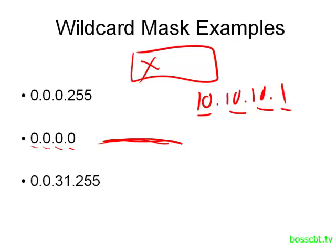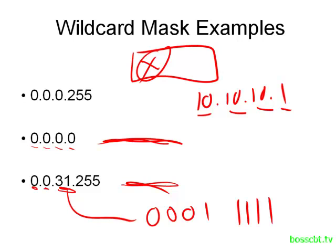Let's take a look at another example — this one is a bit more complicated. Whatever IP address we have configured in the access list, we're going to say that the first two octets have to match whatever is in our packet because those are all 0s. The third octet is a bit different — in binary, the first three bits would have to match but the last five do not. And since the last octet is all 1s, that entire octet doesn't have to match. Knowledge of binary and IP addressing is absolutely required to make sense of these.